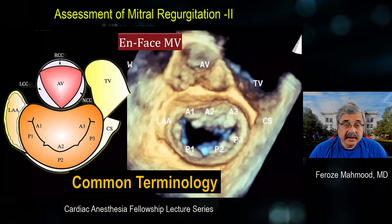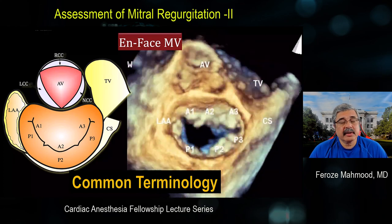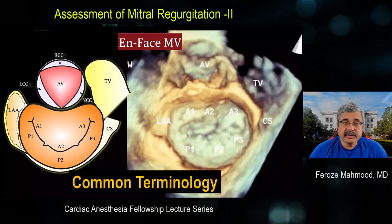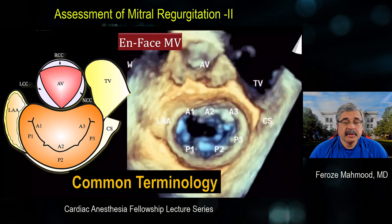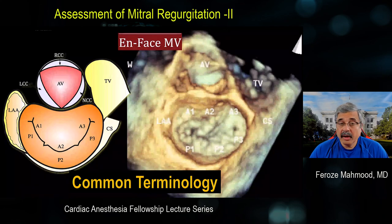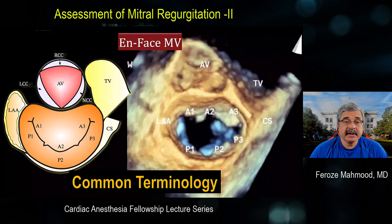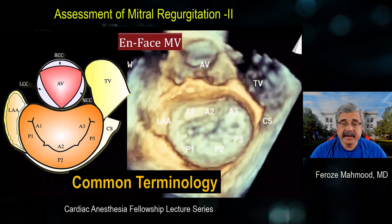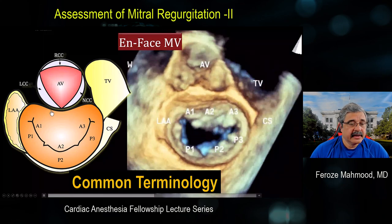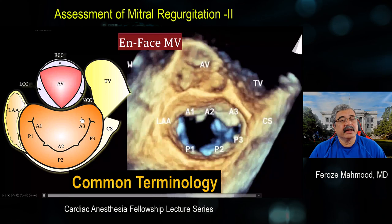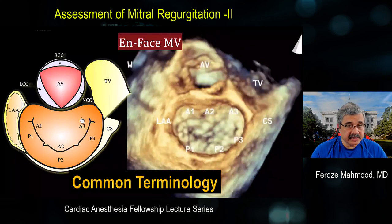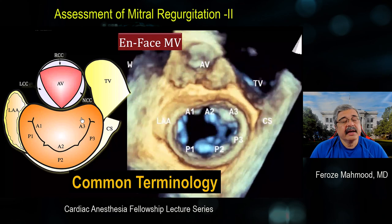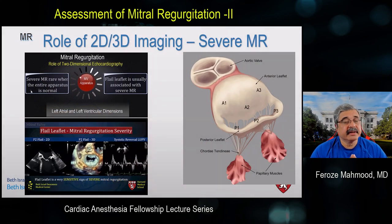With the ready clinical availability of three-dimensional echocardiography, generating en-face views of the mitral valve has become simple. These views are not only physiologically accurate but also anatomically relate to the same surgical exposure our surgical colleagues have after left atriotomy — looking at the mitral valve through the left atrium, seeing the aortic valve, left atrial appendage, coronary sinus, tricuspid valve, and coaptation line in the same perspective as surgeons do. This has led to speaking the same language, facilitating communication and improving patient outcomes.